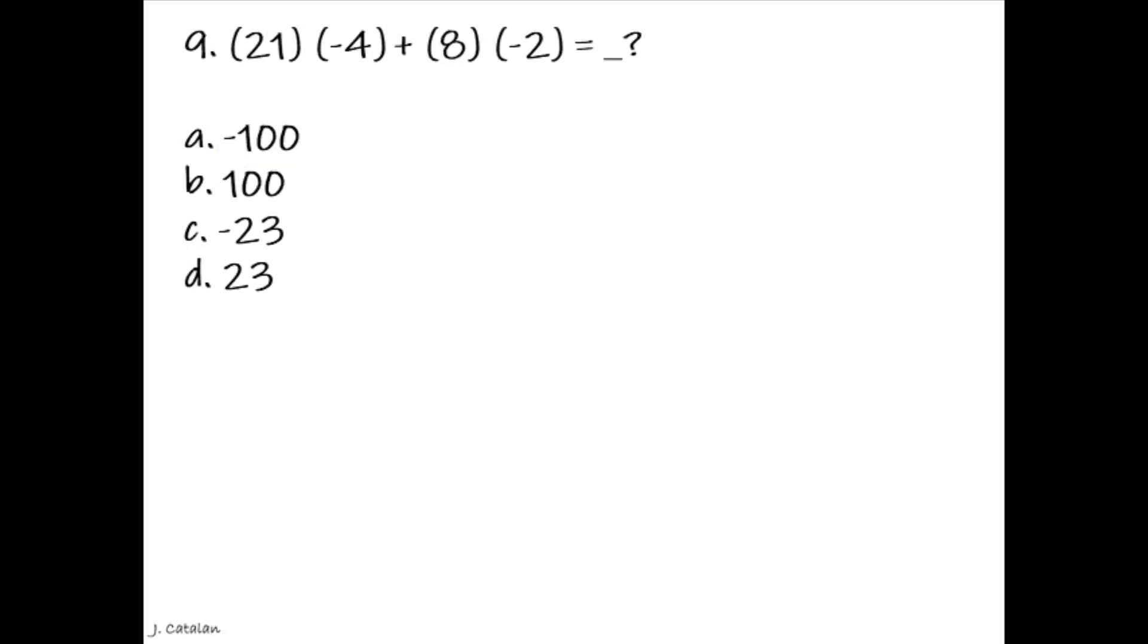Question. Product of 21 multiplied by negative 4 added by the product of 8 multiplied by negative 2 equals underscore. Answer. Negative 100.